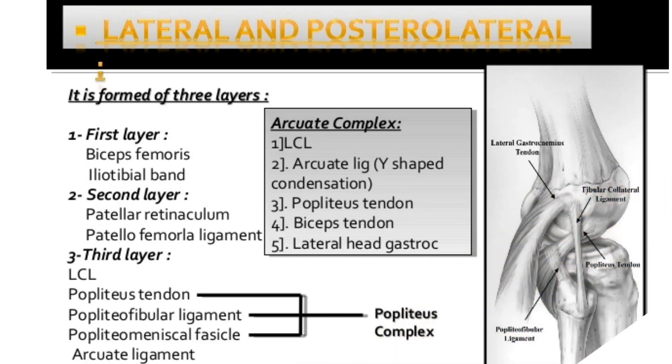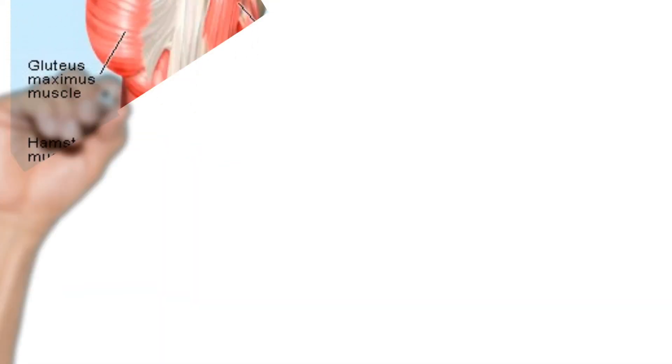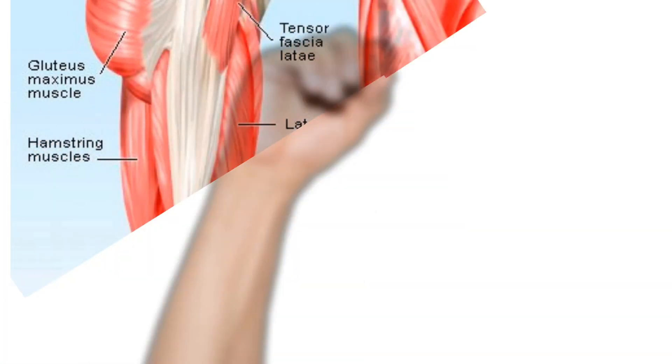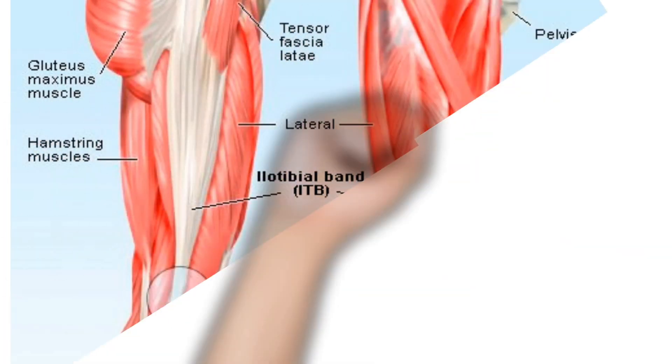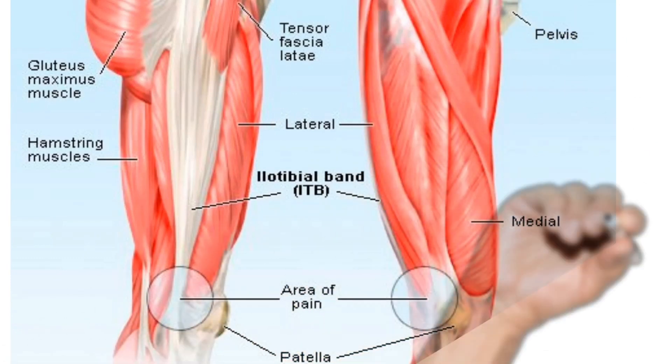From the lateral side of the knee, the first two structures found in layer 1 are the iliotibial band and biceps femoris. The iliotibial band is anterior to the biceps tendon and inserts at Gerdy's tubercle, while the biceps inserts at the fibular head and is the most posterior structure on the fibular head. These are also called the posterior dynamic stabilizers of the posterolateral corner.